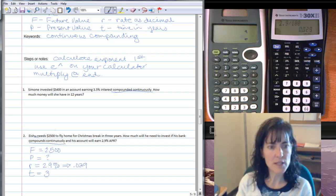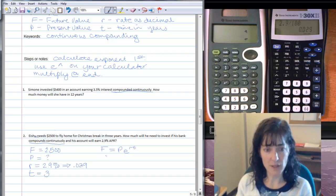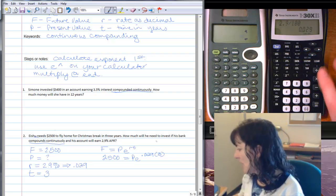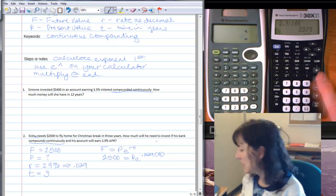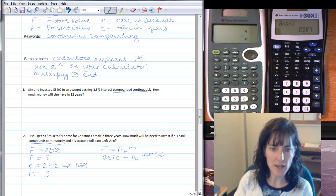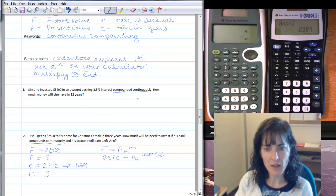And then because it says continuously, compounds continuously, then I know I need to use that F equals P times E to the RT. And if I fill in all my values, I have $2,500 equals P times E and my R is .029 and my T is 3. So I'm going to handle that exponent first. I have the .029 on this calculator already. So I'll say times 3. And so I get .087. That is going to be my exponent here, .087.